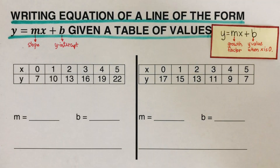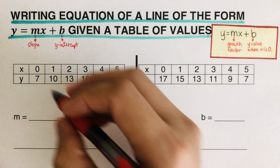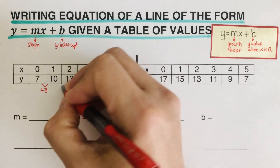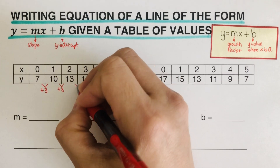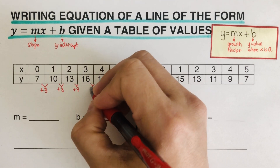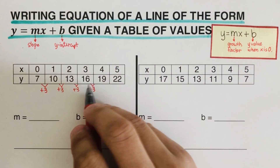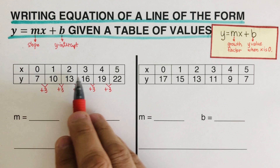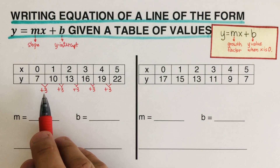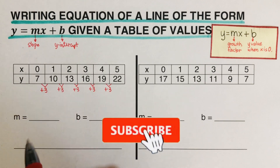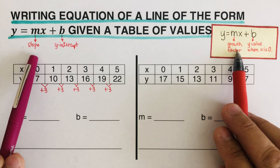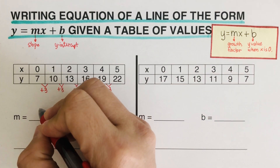Let's go over the first example. We determine how much it grows by. From 7 it goes to 10, so it's adding 3 each time. Adding 3 gives the next value: 16 plus 3 is 19, and 19 plus 3 is 22. So the growth factor — our m, or slope — is 3.